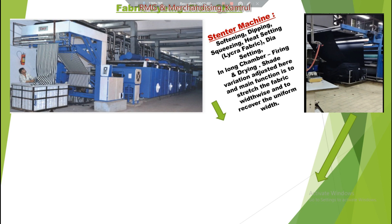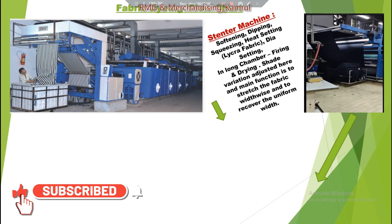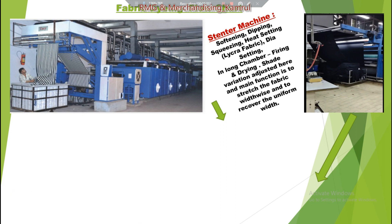One thing to add: for Lycra fabric specifically, after making the batch, before going to the slitting section, the fabric first comes to the heat setting section, and then after heat setting it goes for dyeing. So for Lycra fabric the sequence is: batching → heat setting → dyeing → slitting → stenter. For cotton fabric the sequence I described earlier applies.